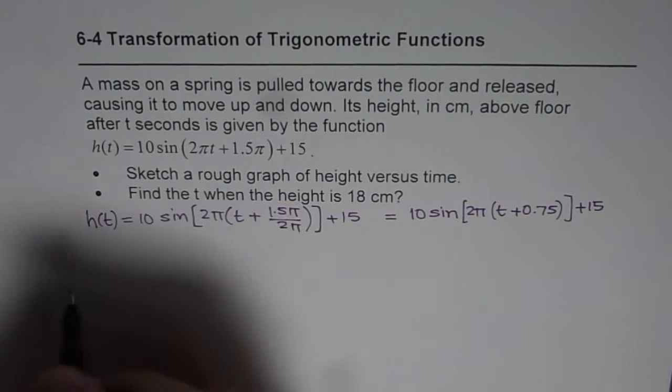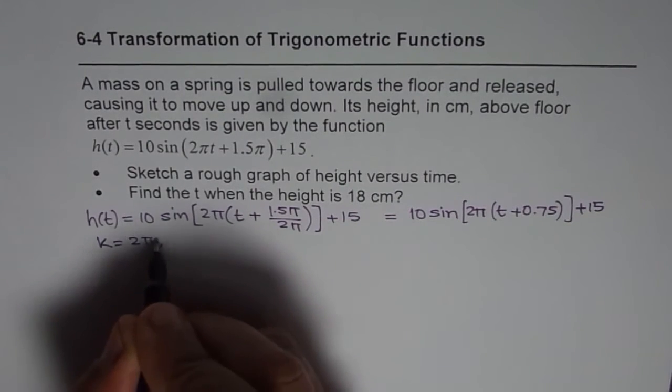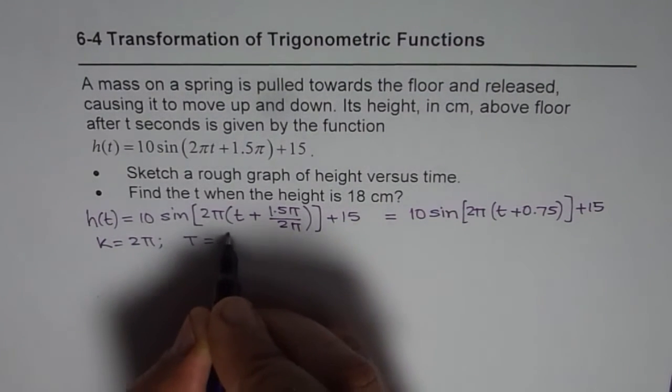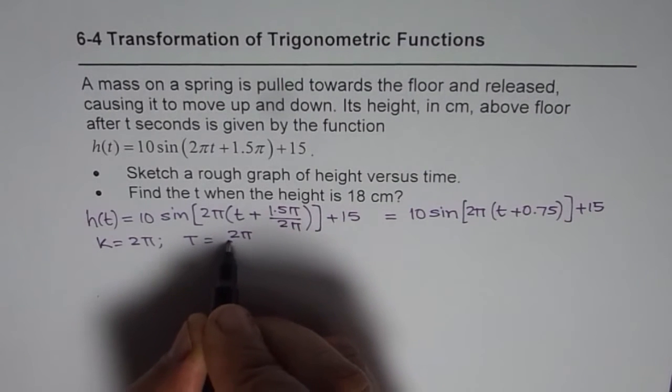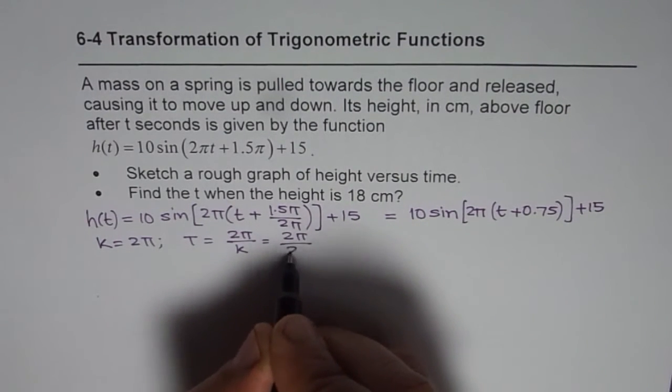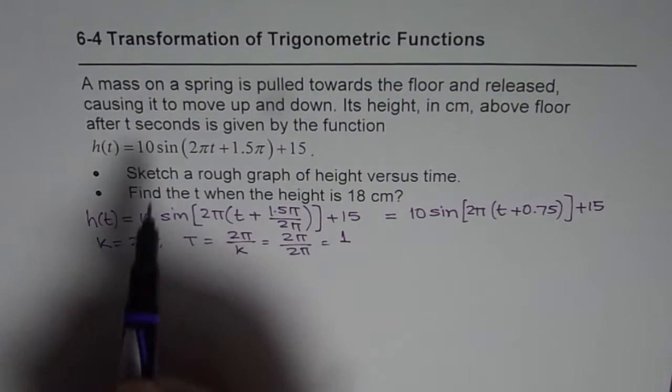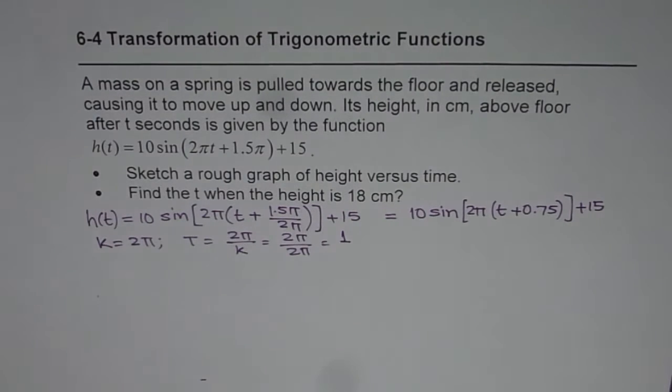From here, k equals 2π. So we can find time period T, which is 2π divided by k. In this case, 2π divided by 2π will give us a time period of 1 second. So that is the time period for us.